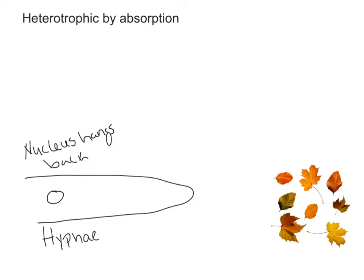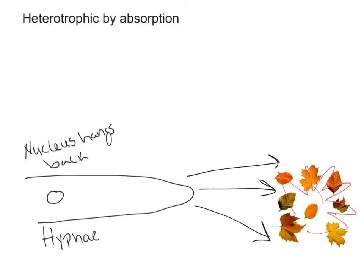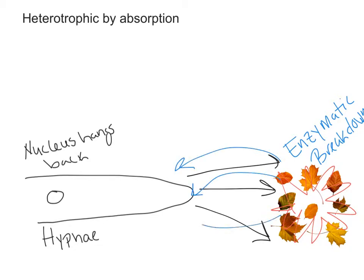Fungi are heterotrophic by absorption, meaning they grow through their food — whether leaf litter, dirt, or a fallen log. The hyphae expand forward while the nucleus hangs back to direct everything. The tip of the hypha releases enzymes that diffuse outward into the food, breaking down whatever is out there. The fungus then waits for those nutrients to diffuse back to the hyphae. This is why they grow through their food — so the hyphae stay close to the nutrients as they are digested.